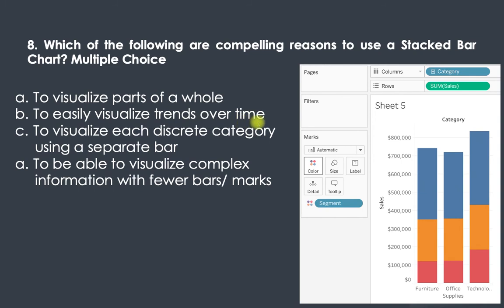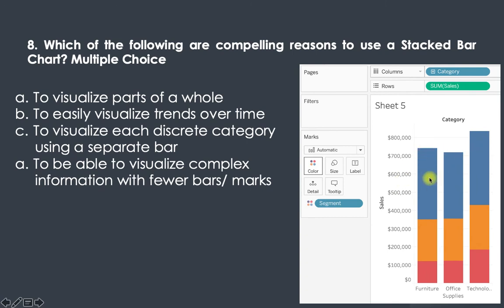To easily visualize trends over time can be done with a normal bar chart, so that's not a specific reason for stacked bars. To visualize each discrete category using a separate bar also doesn't require stacking. But to visualize complex information with fewer bars is correct — a stacked bar shows both category-level and segment-level sales in fewer bars. So the answers are the first and last options.